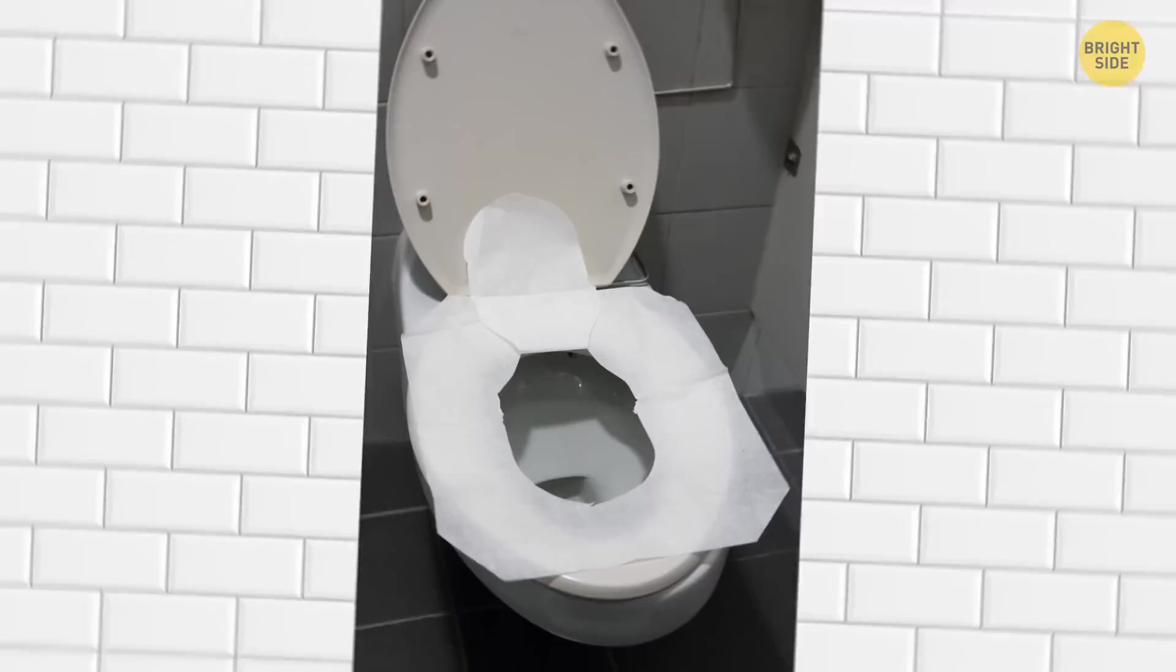Toilet seat covers have been used wrong for way too long. I see you ripping off that flap that looks like a tongue. No, you're doing it all wrong. Instead of tearing it off, let the flap sit in the bowl after you put down the cover. When you flush, the suction will pull on the flap and take it away. Aren't you glad you know that now?